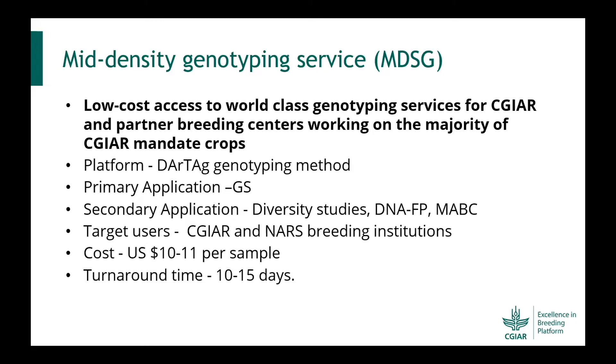The EIB mid-density genotyping service is typically a DArTag custom amplicon-based genotyping method, primarily suited for the application of genomic selection, but you can also use it for diversity studies, DNA fingerprinting, marker-assisted background selection, coupled with KASP-based targeted trait low-density genotyping. The service is targeted at CGIAR and NARS breeding institutions, and by aggregating demand across institutions, we offer a genotyping cost in the range of $10 to $11 per sample, depending on the number of samples submitted in a batch, with a turnaround time of 10 to 15 working days once the sample reaches the lab.